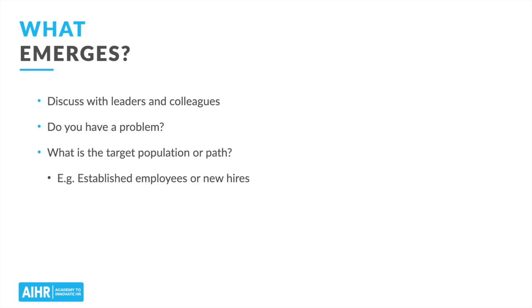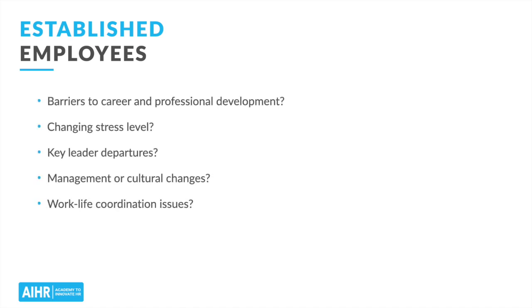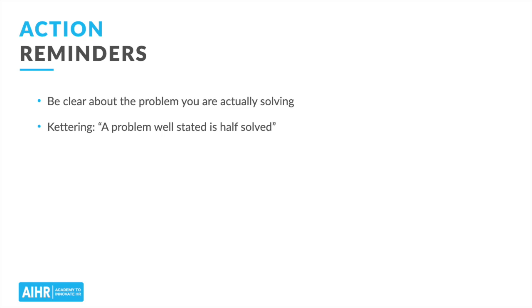The key point is: do not just look at your turnover numbers in isolation. Given those steps and ensuing discussions with leaders and colleagues, what emerges? Do you actually have a problem? If so, what target population or path makes the most sense? As part of any later action planning process, I would suggest the following considerations. First, if you're seeing departures with your established employees, ask questions such as: Are there barriers to career and professional development? Has the stress level for that role changed in recent years? Has the team or business area seen departures of key leaders? Have there been other management or cultural changes? Are there basic work-life coordination issues at play? For turnover issues tied to new hires, on the other hand, I would consider: Was the job different from what was expected? Are recruiters honestly and accurately describing the job? Is there poor training, high stress, or high pressure? Are there inflexible hours or work-life coordination issues? Are there known issues with poor management or poor supervisors? There's no guarantee that targeted intervention efforts will work as planned, but you need to be clear about the problem you're actually solving. As Charles Kettering once said, a problem well stated is half solved.